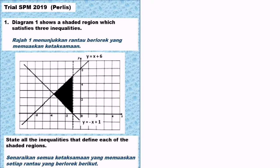Last question: SRA SPM 2019. Diagram 1 shows a shaded region which satisfies three inequalities — state all the inequalities that define the shaded region. The equation of the first straight line is y equals negative x plus 6. Referring to the shaded region, the shaded region is below the straight line, so the first inequality is y less than or equal to negative x plus 6.